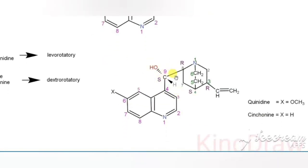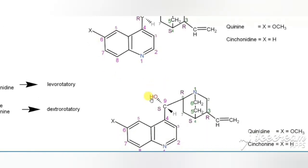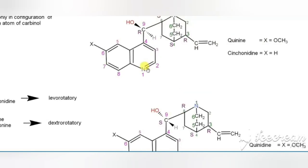For quinidine: the eighth carbon has R configuration and the ninth carbon has S configuration. For quinidine, the hydroxy group is attached to the carbon in beta configuration, and the hydrogen is attached in alpha configuration at C9. So quinine and quinidine differ only in the configuration of the carbinol carbon.